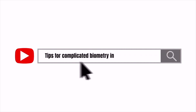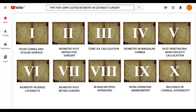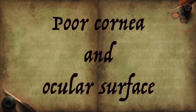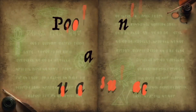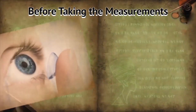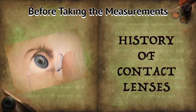We did an online search for this and the first scenario is that of poor cornea and ocular surface. The commandment to be followed here is taking history of contact lenses.